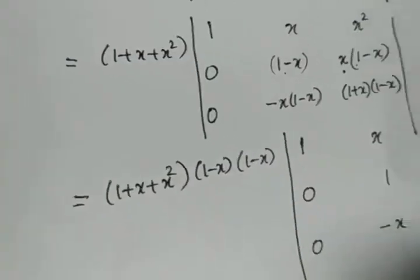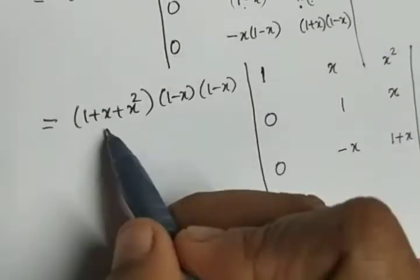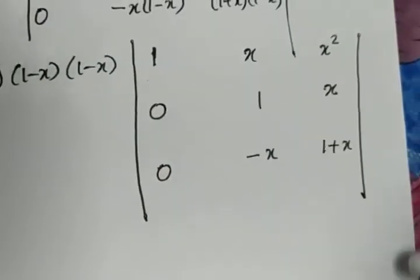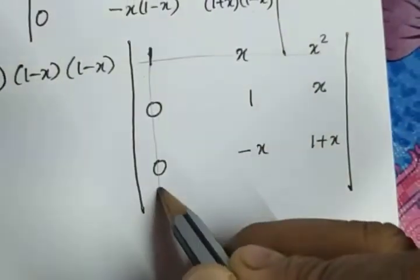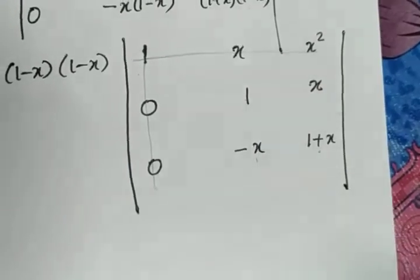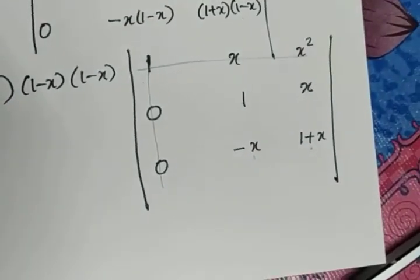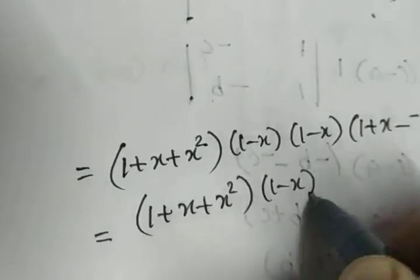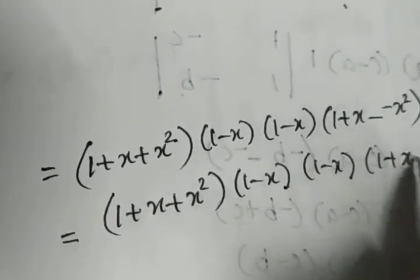Now expand the determinant using the first column. We get (1 + x + x²)(1 - x)(1 - x) times the 2×2 determinant: 1·(1 + x) - x·(-x) = 1 + x + x². So the full expression becomes (1 + x + x²)(1 - x)(1 - x)(1 + x + x²).